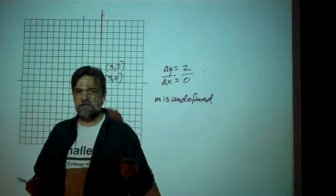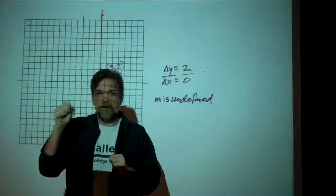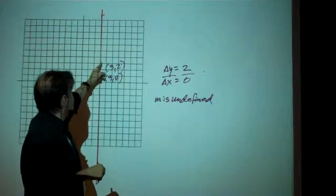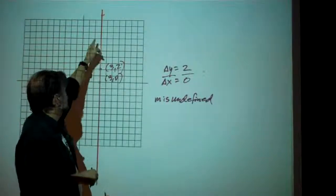Remember how with horizontal lines, what the points all had in common was their y-coordinate was always 4. What do the points here all have in common? Their x-coordinate. The x-coordinate is always going to be 3.